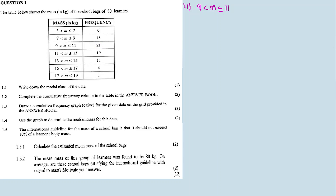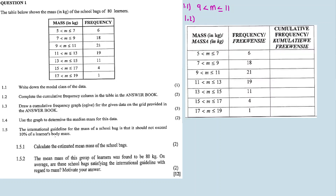And then it means our modal class is 9 to 11. Question 1.2: complete the frequency column in the table in the answer book. Complete the cumulative frequency column in the answer book.